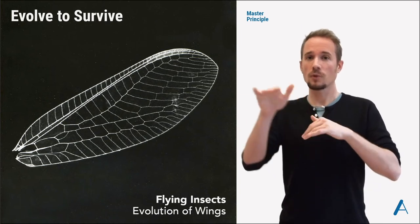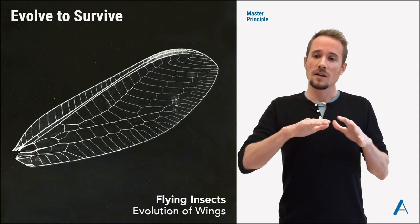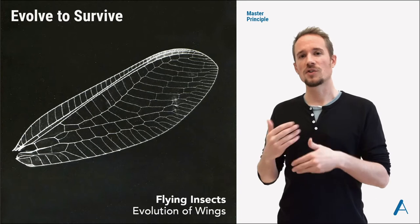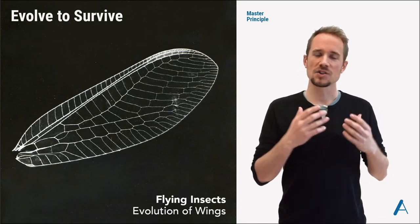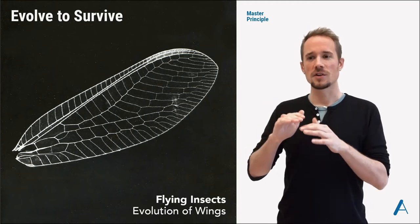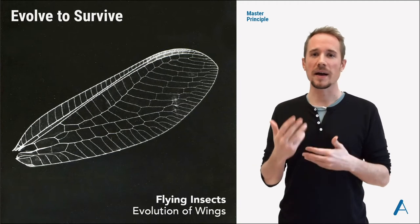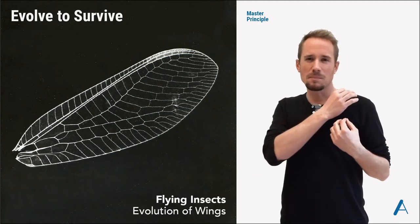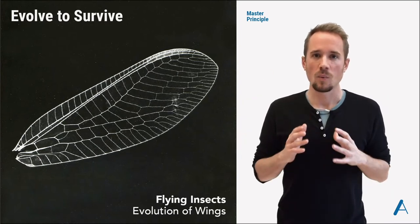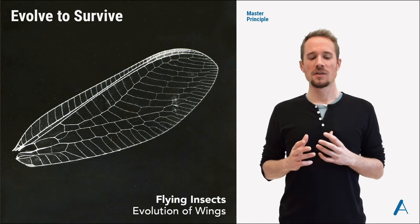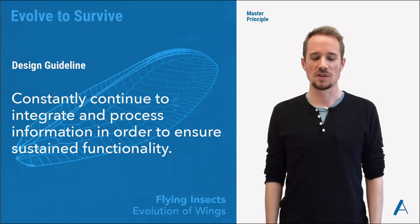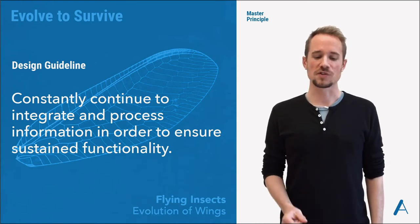They could float for a while, they could jump farther. And when these insects started to live on land over generations, it was a big advantage if these body parts were bigger, and they started to really float in the air, jump farther and start to fly. And over time, out of these little appendages, real wings developed. Our design guideline here: constantly continue to integrate and process information in order to ensure sustained functionality.